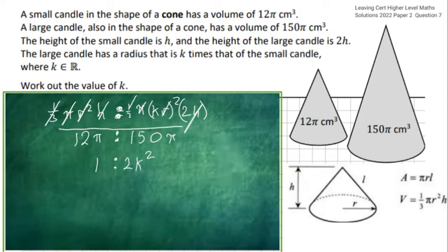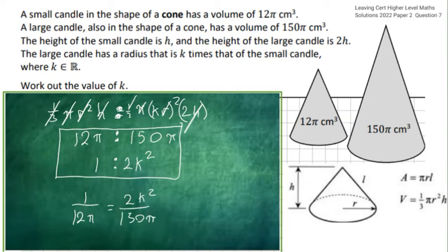Alright so now we're going to use all this information to solve for k. So we can go 1 over 12 pi is equal to 2k squared over 150 pi. Let's cross multiply. So 150 over 12, the pi's will cancel, is equal to 2k squared. Divide across by 2 and get our square root. So k squared is equal to 75 over 12 and k is the square root of 75 over 12 which is 2.5. And that's part B.